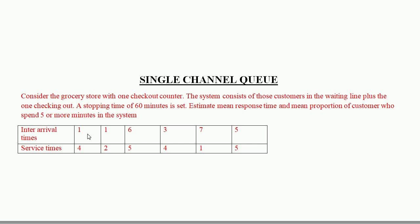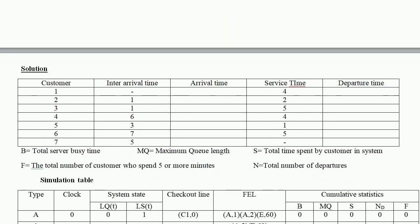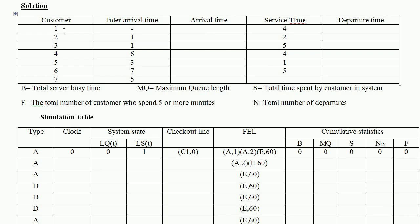The inter-arrival times are 1, 1, 6, 3, 7, and 5. Service times are 4, 2, 5, 4, 1, 1. For the first customer, there is no inter-arrival time because the first customer arrives at time zero. For the second customer, inter-arrival time is 1, so arrival time is 0 plus 1 equals 1.